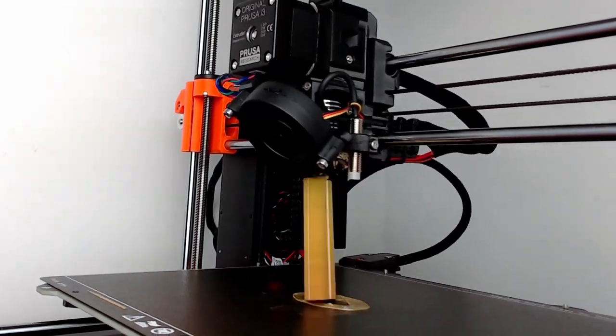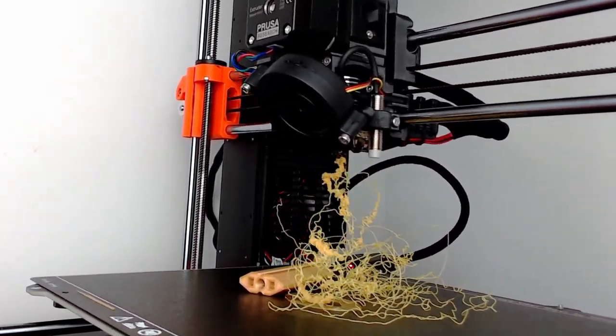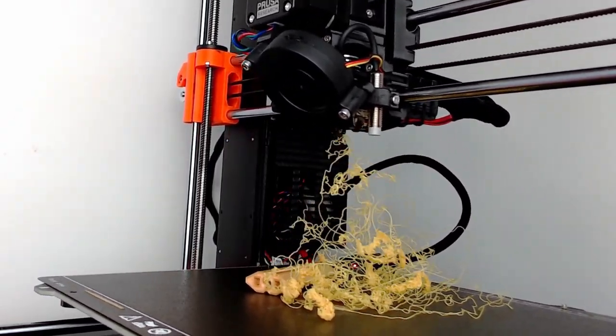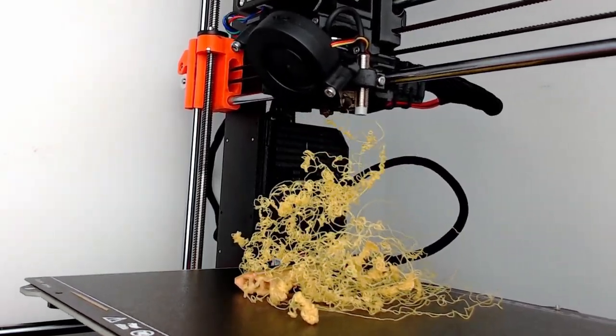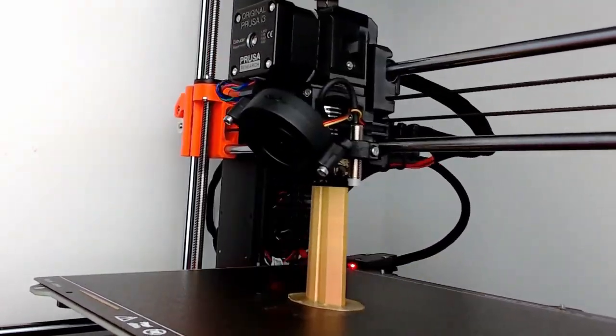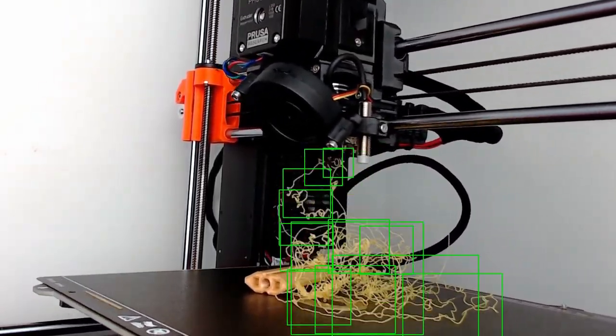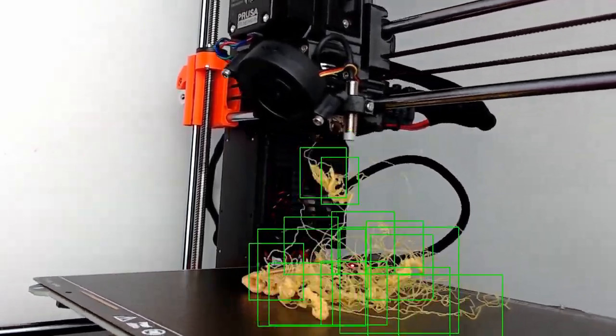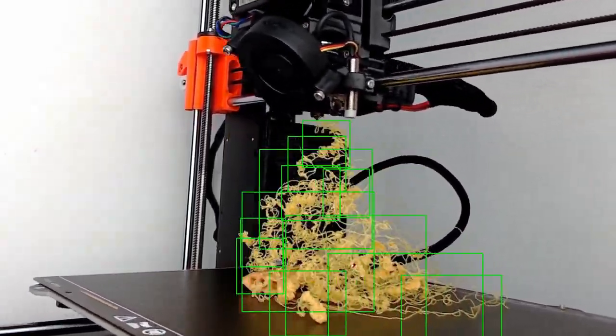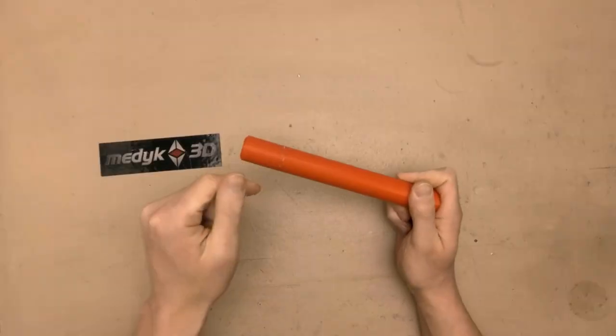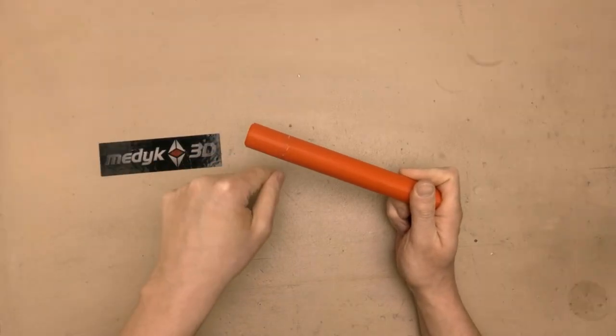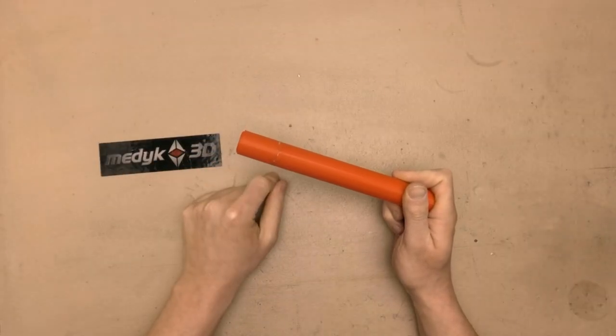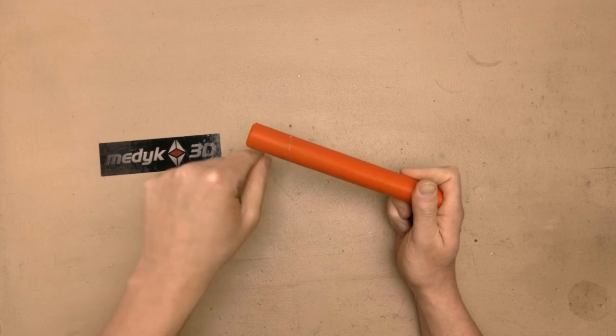And now let's check some of my failed prints. This is what happened without the detective on. And here you can see what the detective can see. As you can see, there are some green boxes around the suspicious area and at that point the print will stop and ask for your attendance.